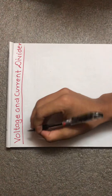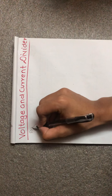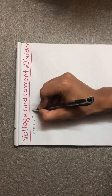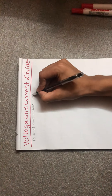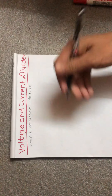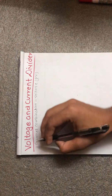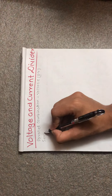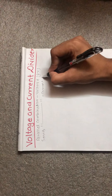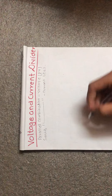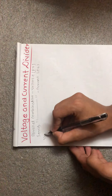First of all, in a parallel combination, voltage is the same. We can remember this with the shortcut 'PV' — Parallel: Voltage same. In a series combination, current is the same. We can remember this with the shortcut 'CS' — Current in Series is the same. Now let's look at the voltage divider rule.